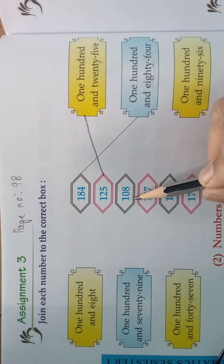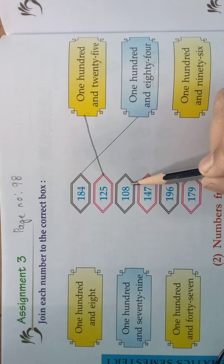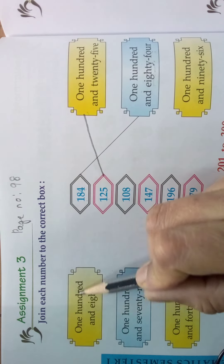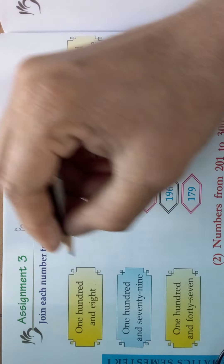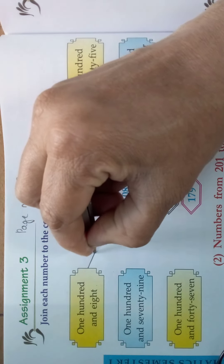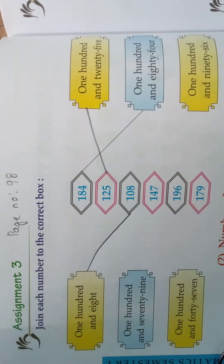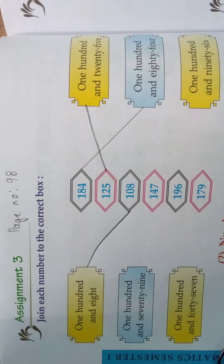I will do one more. One hundred and eight. Where is one hundred and eight? One hundred and eight — this here only. So match it to this. One hundred and eight. In this way you do the remaining ones.